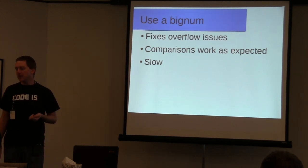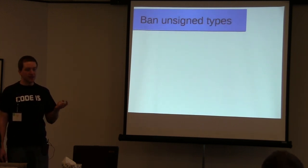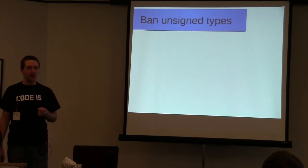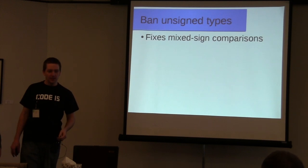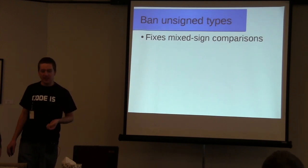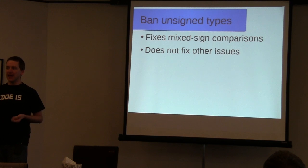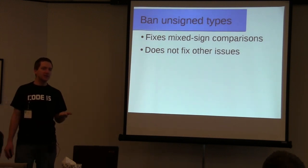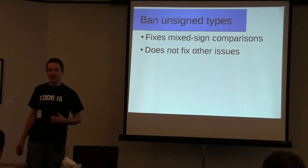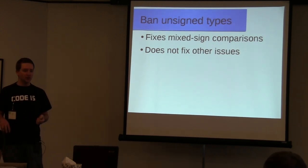A solution that many organizations settle on is banning unsigned types. I've seen a lot of coding standards that say don't use unsigned — everything is int. This fixes mixed-signed comparisons, but it does not fix any other issues. You still have undefined behavior for overflow. And if you try to save space by using int8_t or int16_t, you still run into the realm of implicit integral promotions.